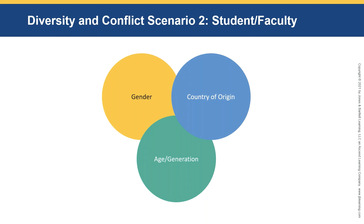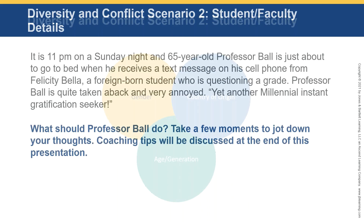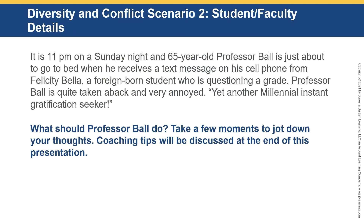Scenario two is a student-faculty conflict — the first was student-to-student, this is student-to-faculty — involving gender, generation and age, and country of origin. It's 11 p.m. on a Sunday night and 65-year-old Professor Ball is about to go to bed when he receives a text message from Felicity Bella, a foreign-born student questioning a grade. Professor Ball is quite taken aback and annoyed, thinking 'yet another millennial instant gratification seeker.' What should Professor Ball do? Take a few moments to jot down your thoughts — coaching tips will be discussed at the end.